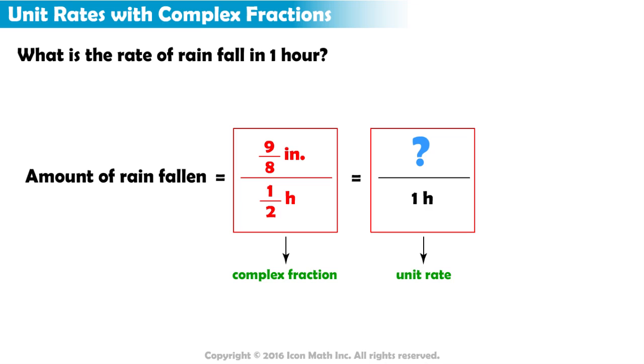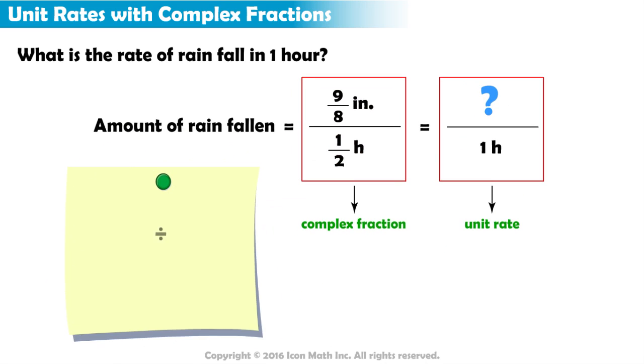To calculate a unit rate, we divide the numerator of the fraction by its denominator. For this rate, we need to divide nine-eighths by one-half.